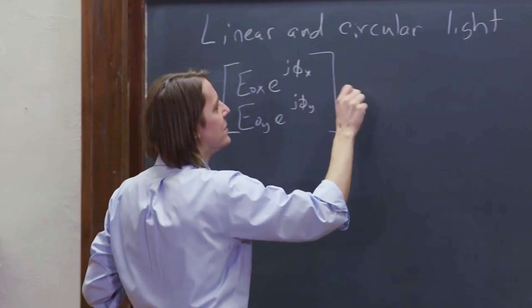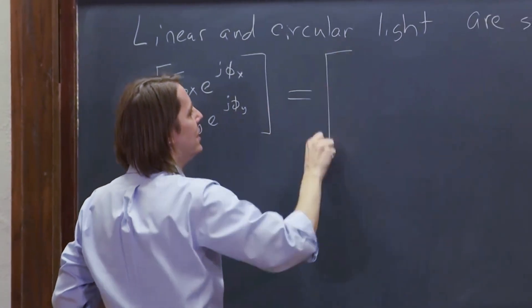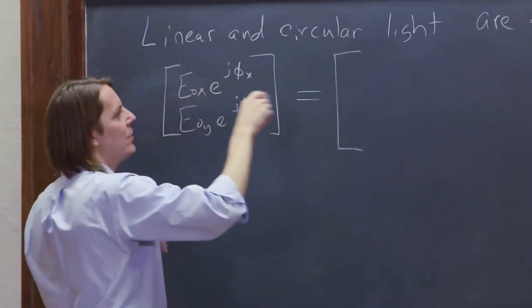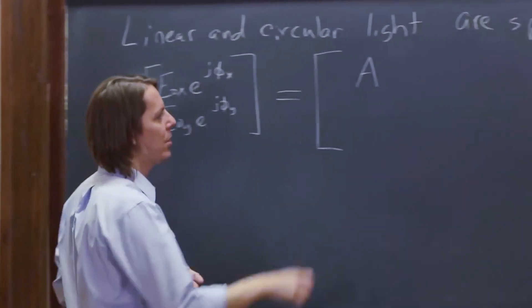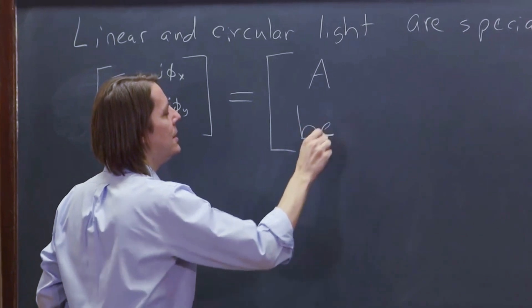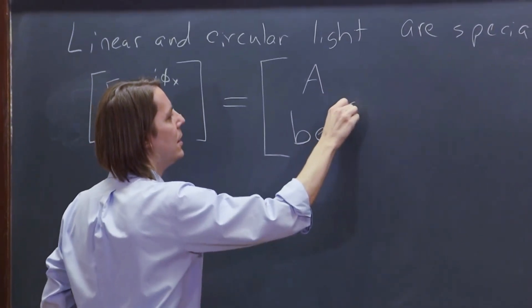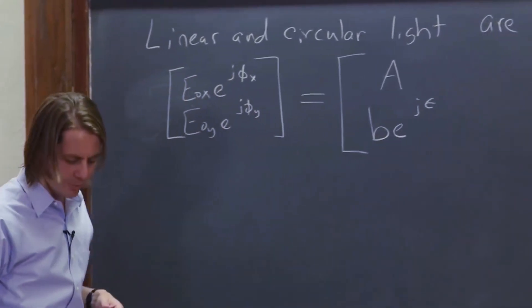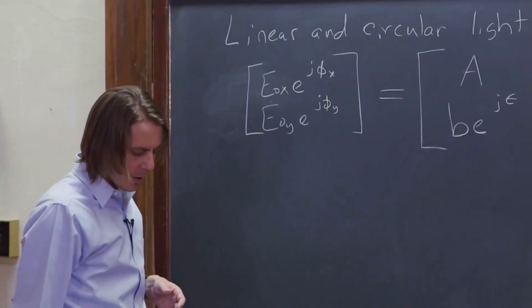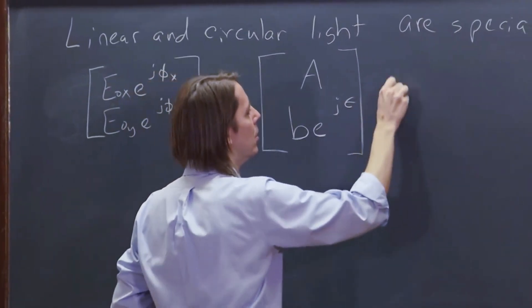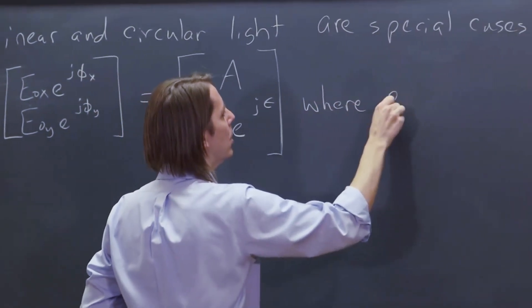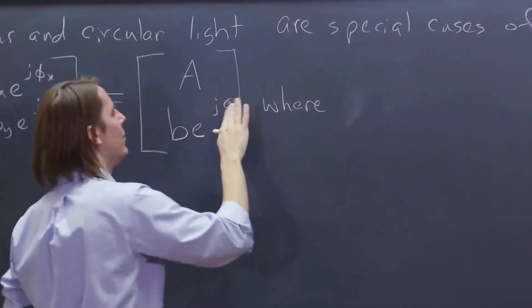So you can write this equivalently, you can do something like that to make the top part real A and make the bottom part complex, a little B E to the J epsilon. We'll call it epsilon.